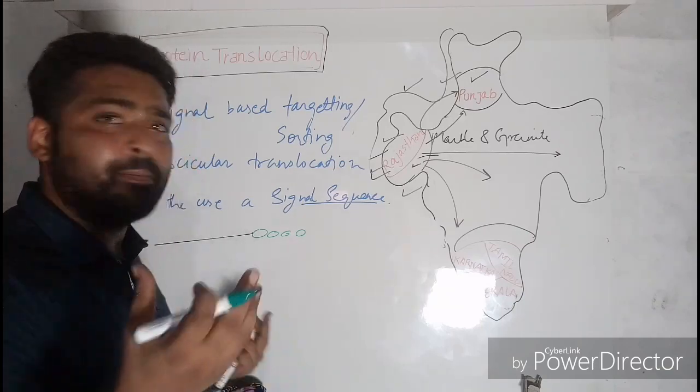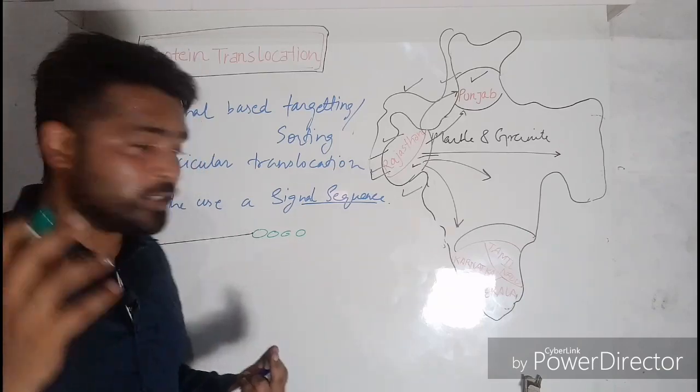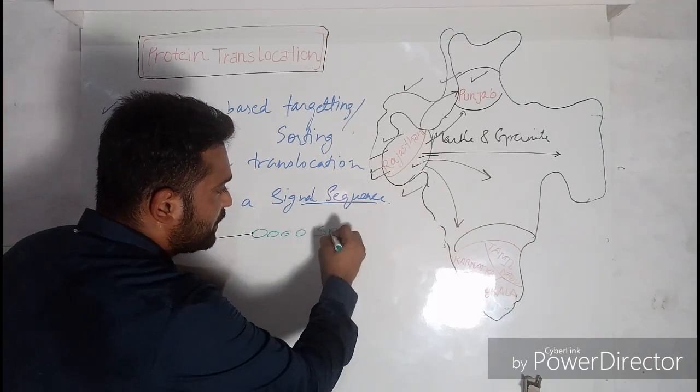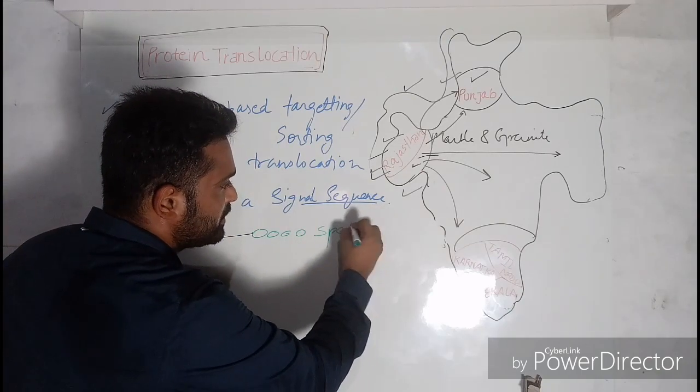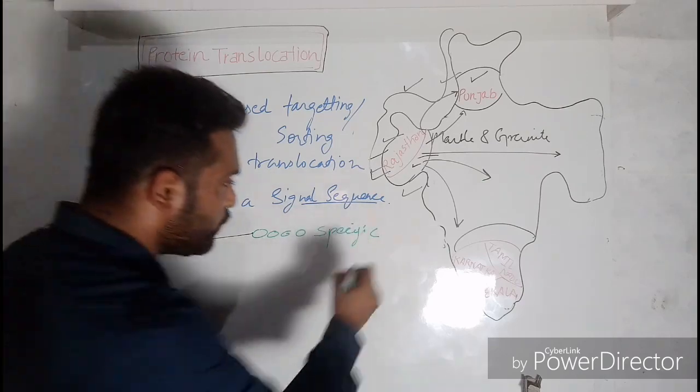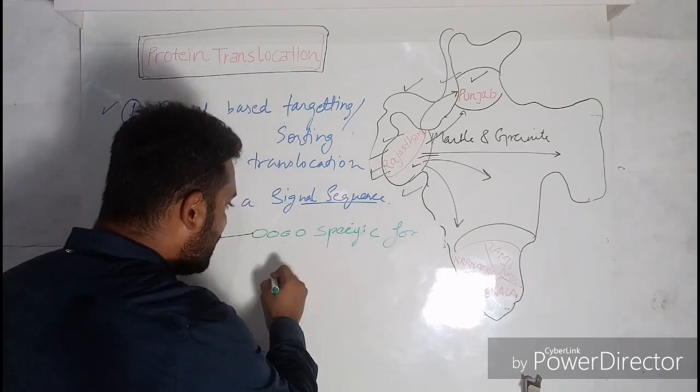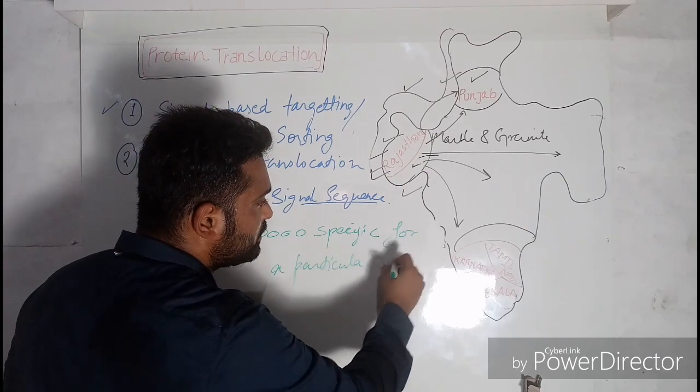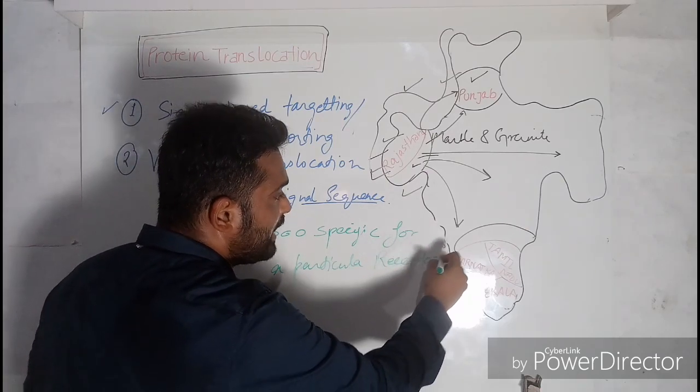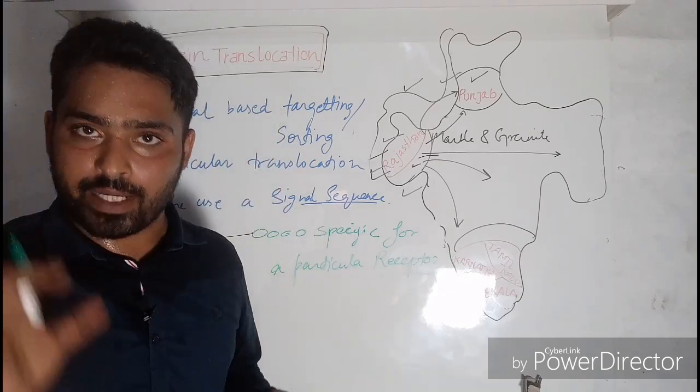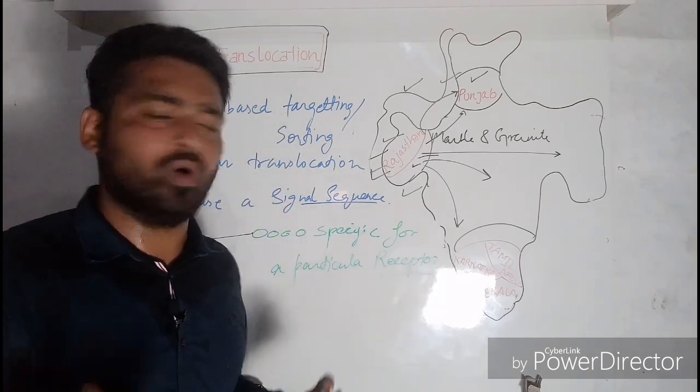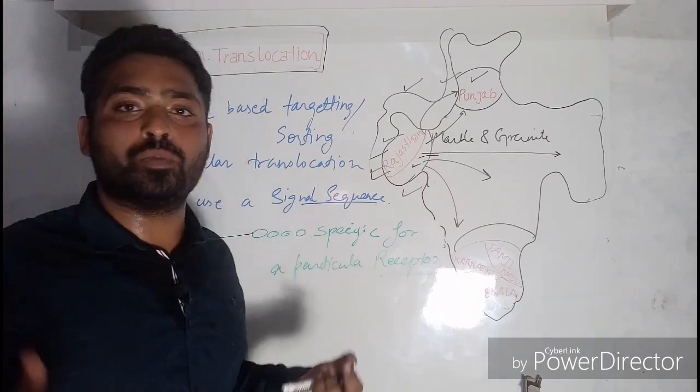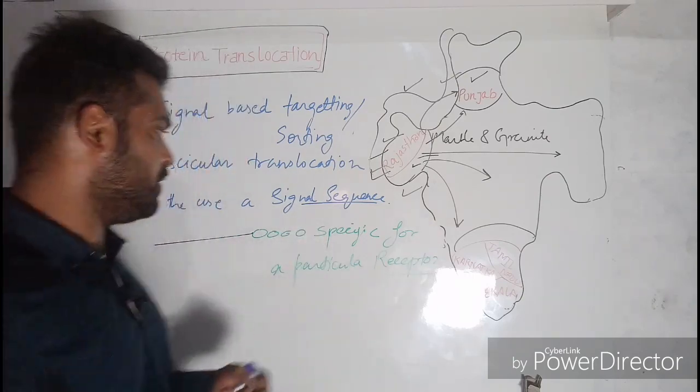or a peptide sequence of amino acids which is specific. You have to listen this: specific for a particular receptor, and that receptor is present on an organelle or a location where the protein is going to be sent or delivered.